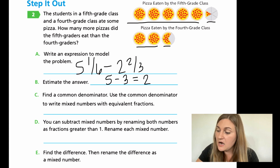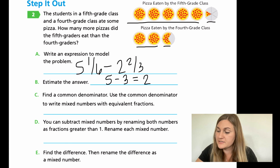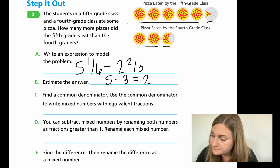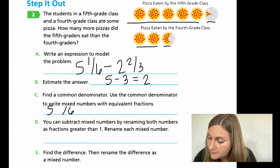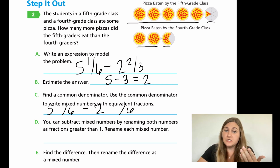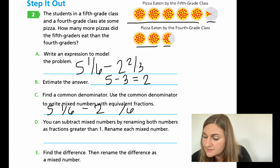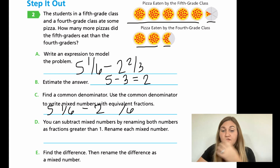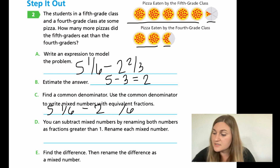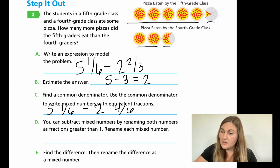For C, find a common denominator and write mixed numbers with equivalent fractions. The common denominator between six and three is six. I have whole number five, denominator six — no change, so the numerator stays as one sixth. For the second number, I go from three to six by multiplying by two, and the numerator two times two equals four. So I have five and one sixth minus two and four sixths.